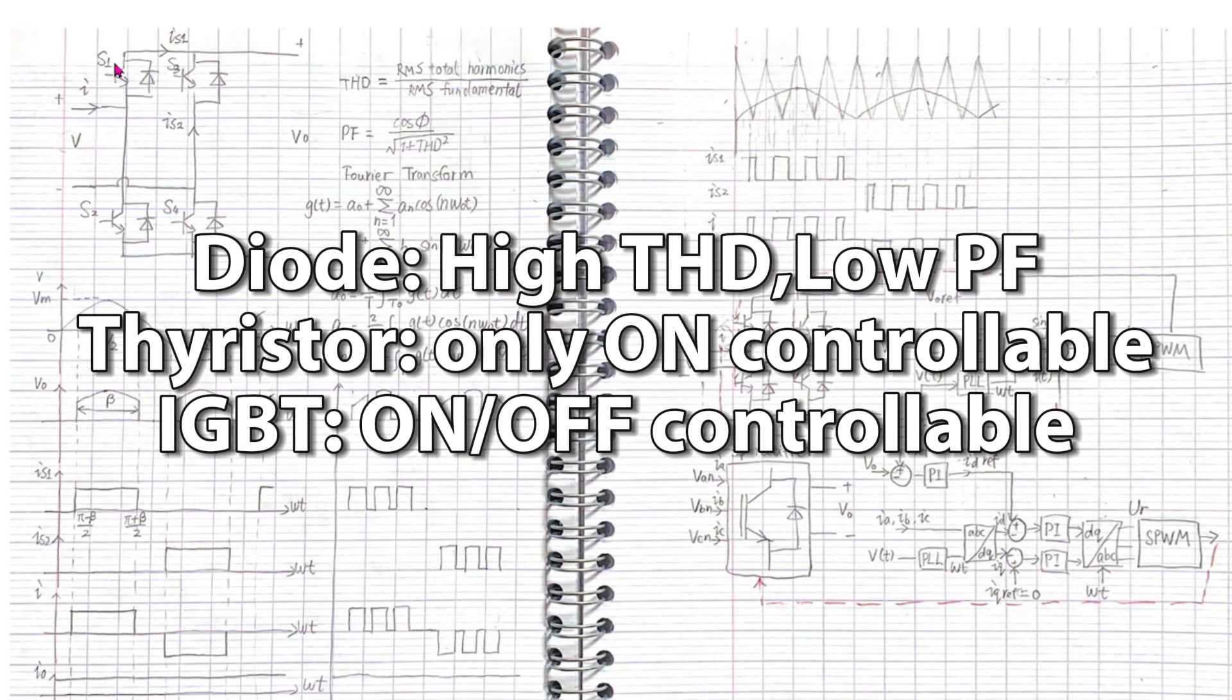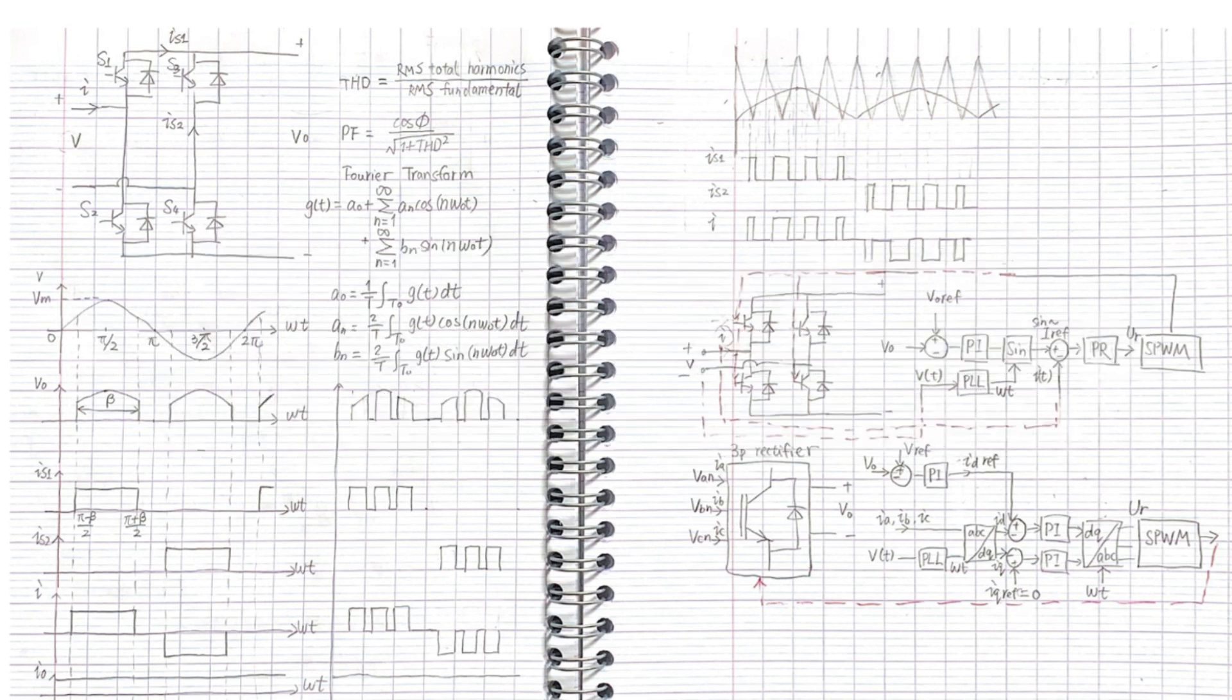With the IGBT, we can switch on and off. With the IGBT in the rectifier, we can rectify the AC as we wish to obtain less harmonics and higher power factor. There are many ways to control the switches. One YouTube video explains these methods well. I put the YouTube link in the show note.